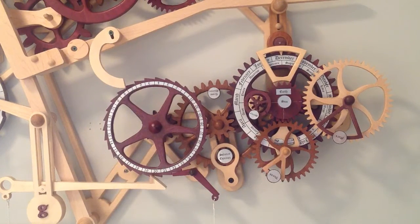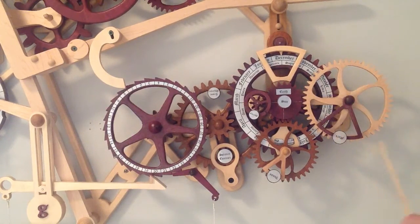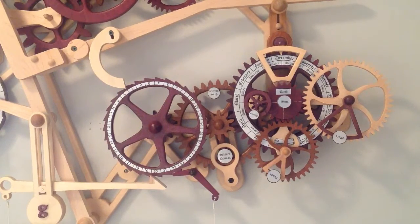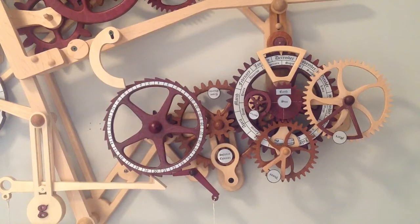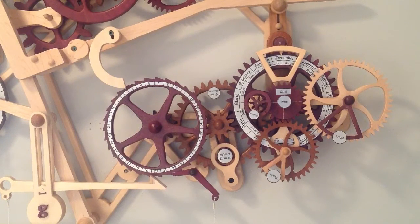The planets move counterclockwise on this model. When they pass this line, going in this direction, they are said to be in retrograde. That is, moving away from the Earth, as seen in the night sky.